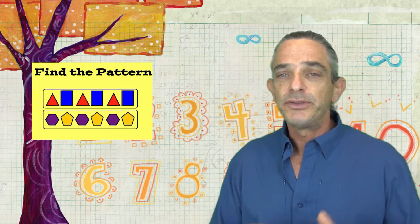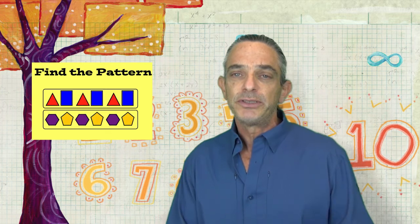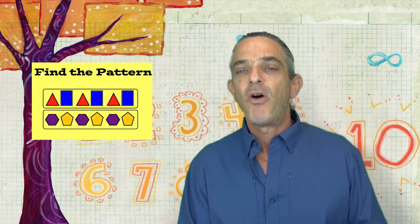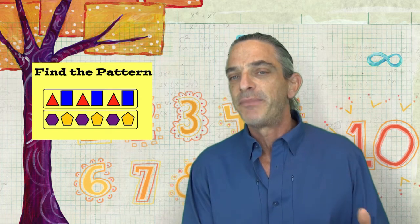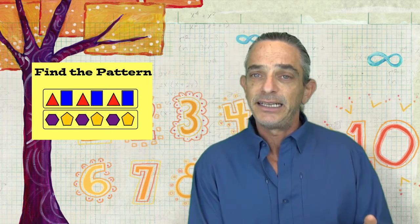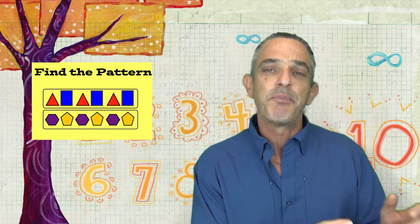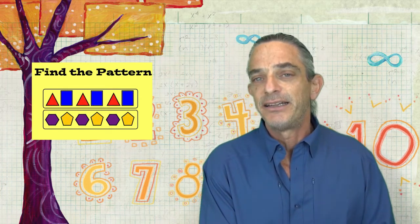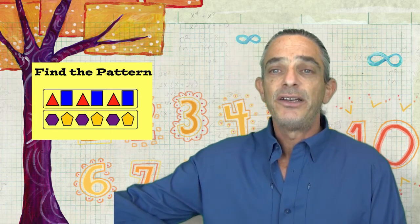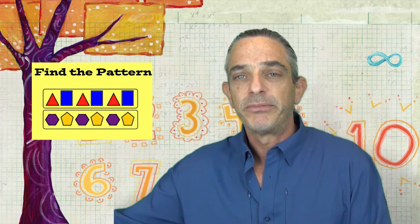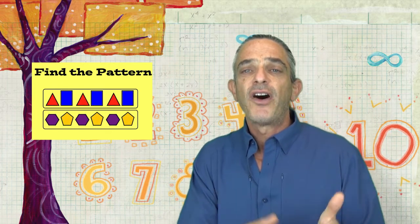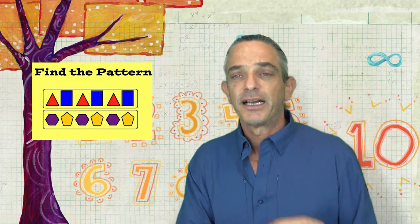So when we use this strategy, what we do is we look at what we already know — the data that they already give us, the information that the story problem tells us — and see if we can recognize a pattern in that data that we can then extend into the unknown and solve our problem. Let's take an example of how we might use finding a pattern to solve a problem.